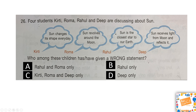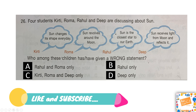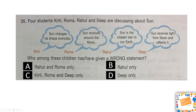Next question: four students — Keerti, Roma, Rahul, and Deep — are discussing about the sun. Keerti says the sun changes its shape every day. Roma says the sun revolves around the moon. Rahul says the sun is the closest star to our Earth. And Deep says the sun receives light from the moon and reflects it. Who among these children has given a wrong statement? Is it option A: Rahul and Roma only, option B: Rahul only, option C: Keerti, Roma, and Deep only, or option D: Deep only?